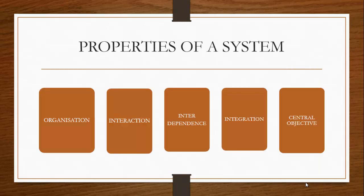The first property of a system is organization. Organization simply implies structure and order. It refers to the arrangement of components that help to achieve some predetermined objective. When we talk about a system being organized, we are talking about that system having structure, with components interacting with each other to achieve a particular or predetermined objective.